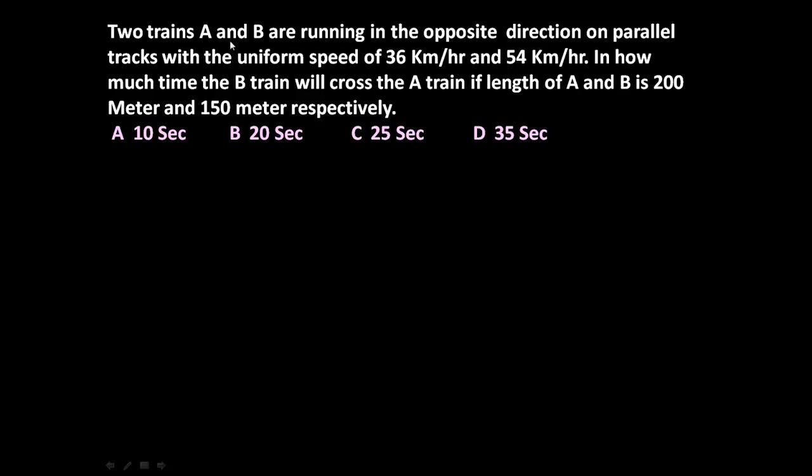Here the given problem is: two trains A and B are running in the opposite direction on parallel tracks with the uniform speed of 36 kmph and 54 kmph. In how much time will B train cross the A train if length of A and B is 200 meters and 150 meters respectively.